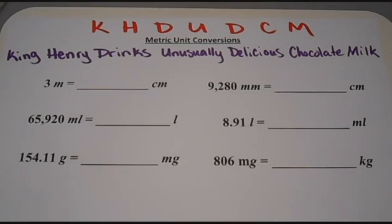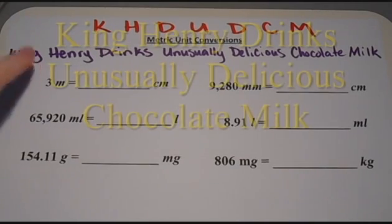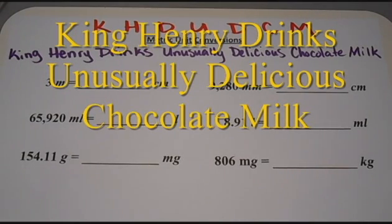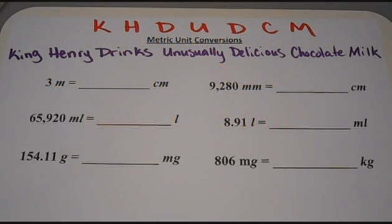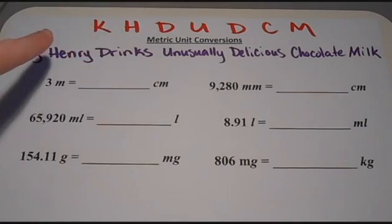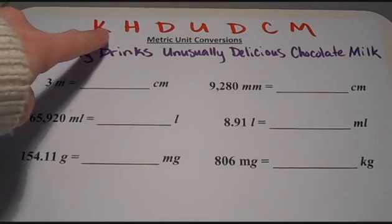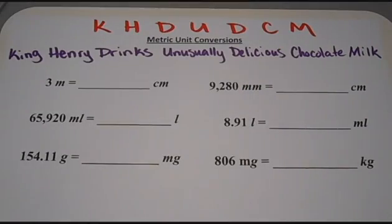The first step is to remember this sentence: King Henry drinks unusually delicious chocolate milk. What this sentence does is give us the beginning letters for all of our prefixes. If you can remember the order of this sentence, then you can remember the order of the prefixes, because these go from the largest to the smallest unit.